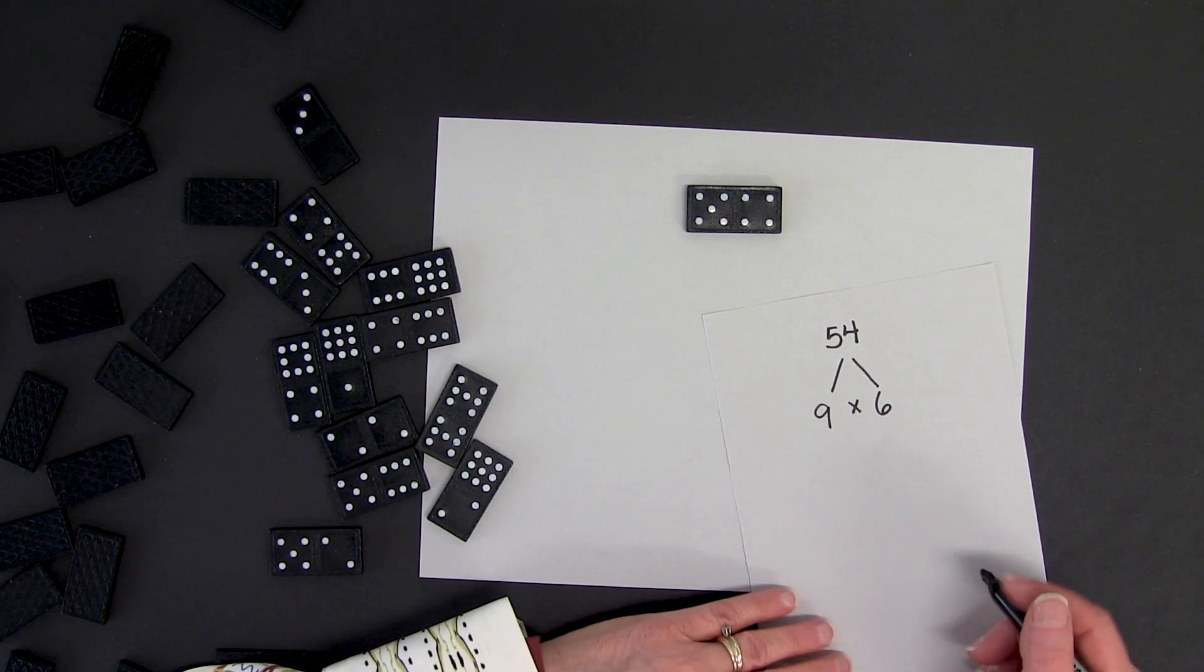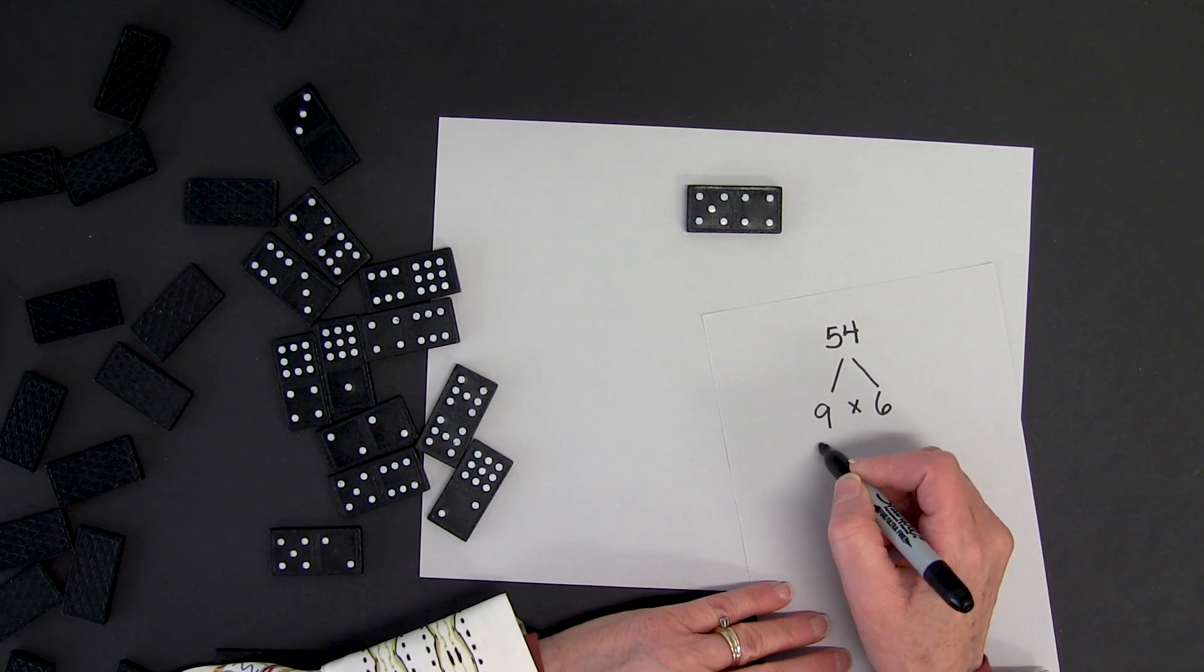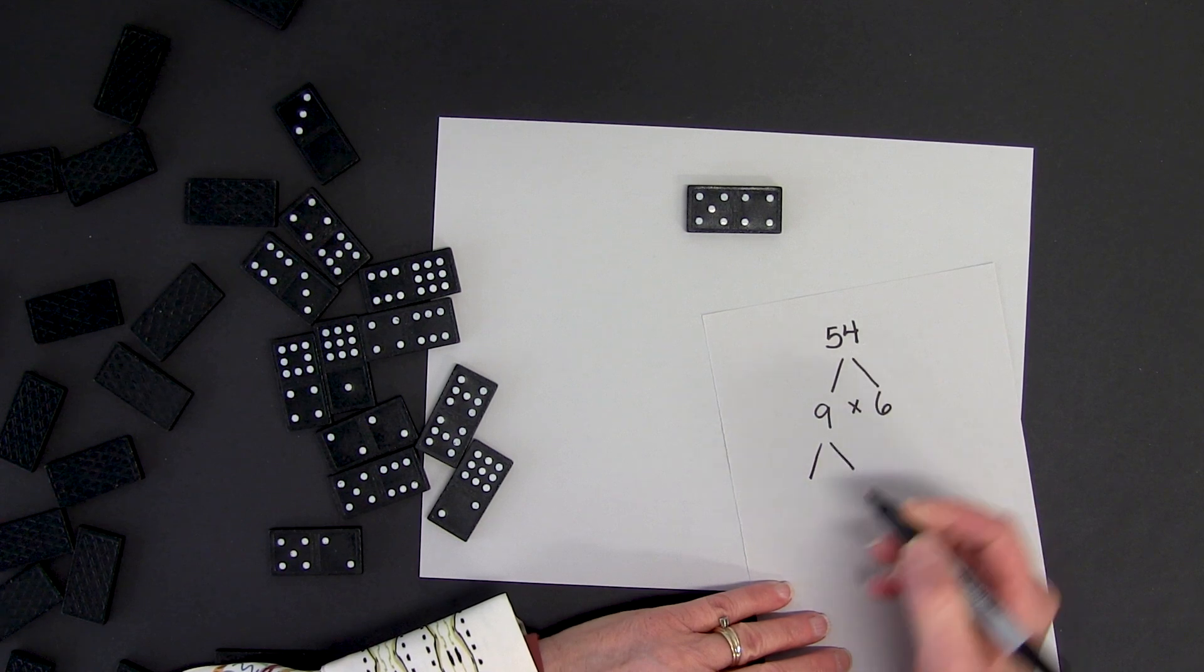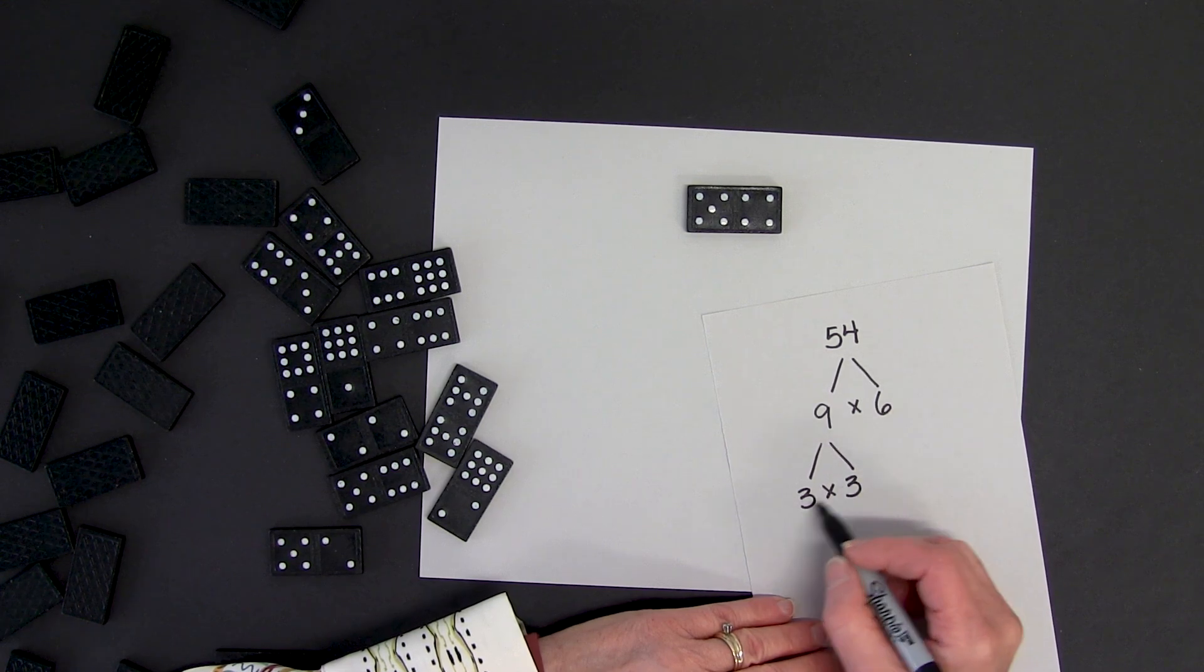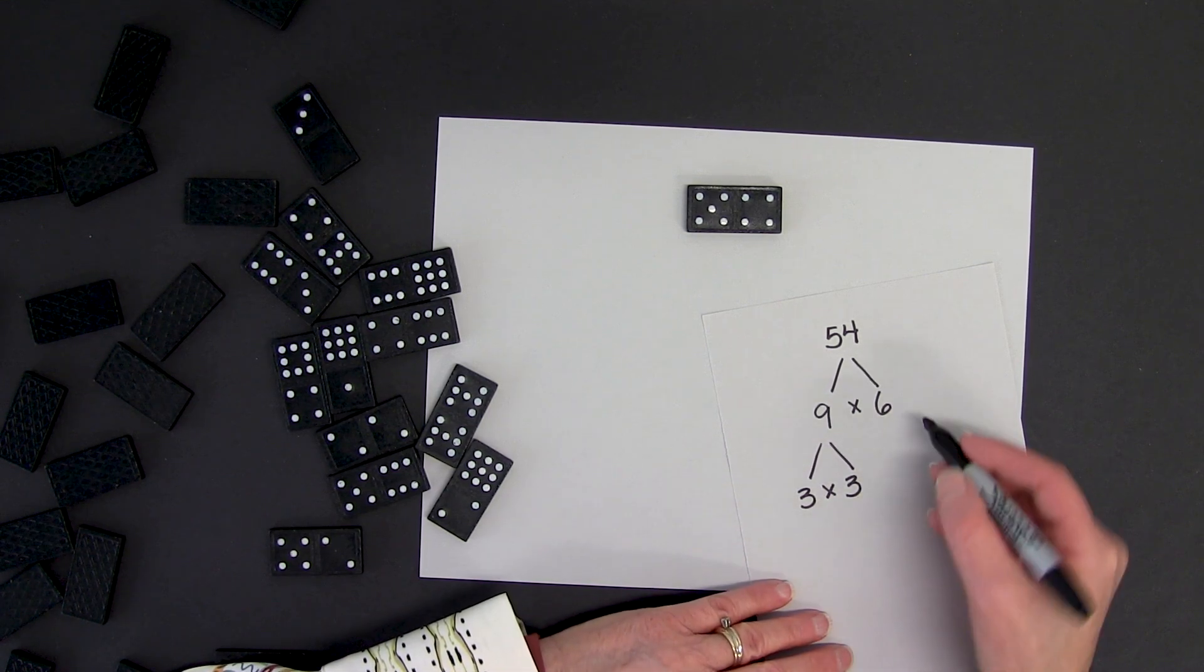Now I want to factor down to the prime numbers. I will continue by factoring 9. And that's 3 times 3. Now those are prime numbers. So I'm finished with that side.